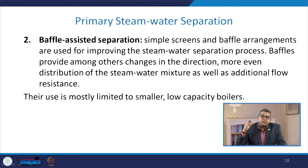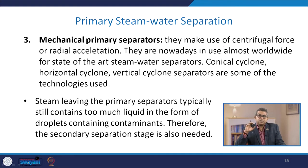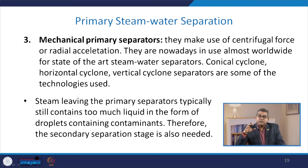Baffles provide, among other changes, changes in direction, more even distribution of the steam-water mixture, and additional flow resistance. Their use is mostly limited to smaller, low-capacity boilers. Third are mechanical primary separators, which make use of centrifugal force or radial acceleration — nowadays used almost worldwide for state-of-the-art steam-water separators. Conical cyclone, horizontal cyclone, and vertical cyclone separators are among the technologies used for this purpose.